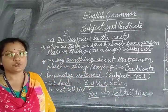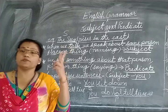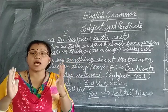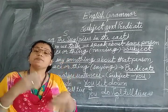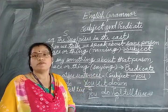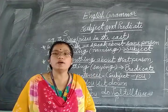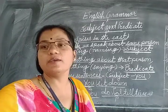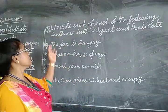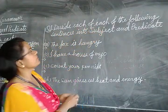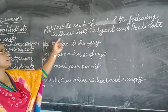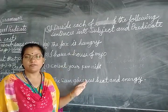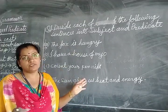Okay children, so what we know: our sentence has two parts — subject and predicate. Now we will do the exercise in our book. The exercise asks us to divide each of the following sentences into subject and predicate. We have sentences and we have to identify which is the subject and which is the predicate.